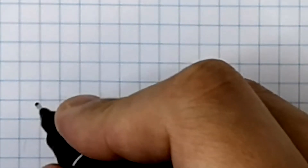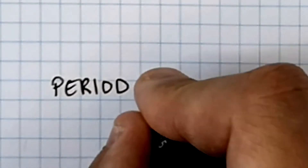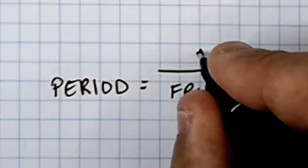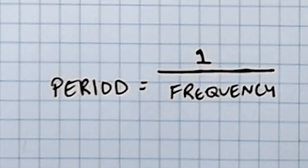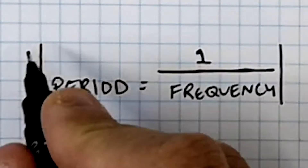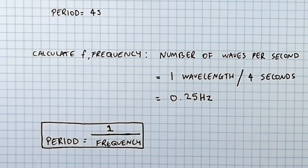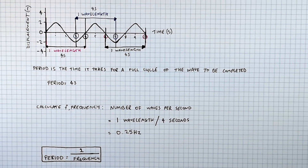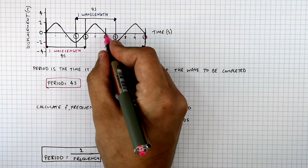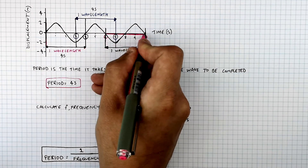I want to introduce this new equation: the period of a wave equals 1 over frequency. We're going to see how the period and the frequency relate to one another. We've got the period, which is four seconds — the time it took for one full cycle of the wave to be completed.